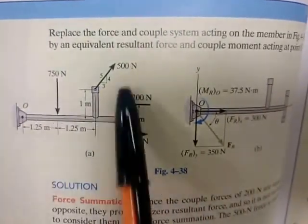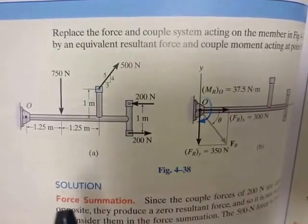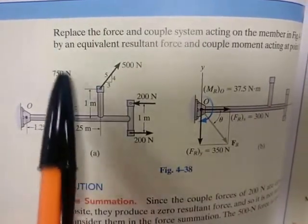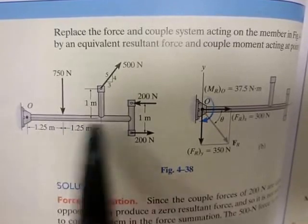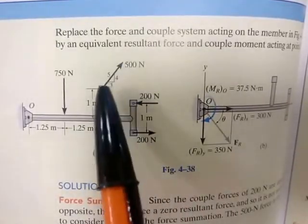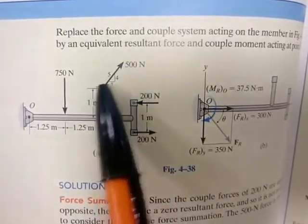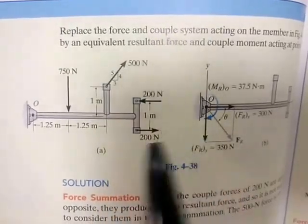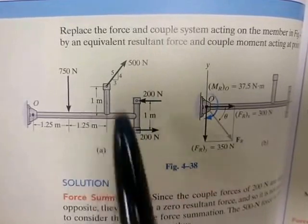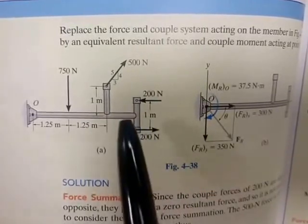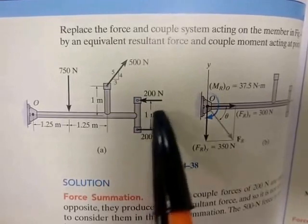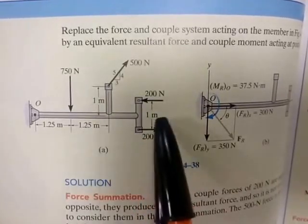If we look at this, we have a 750 Newton force that wants to push the structure down, a 500 Newton force that wants to pull the structure up in that direction, and we have a couple here that wants to cause pure rotation of the structure.